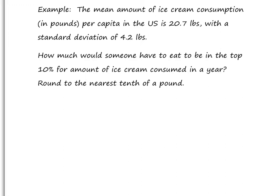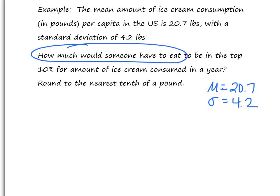So let's see what we've got here. We've got the same information we had before - the mean consumption is 20.7 pounds, the standard deviation is 4.2. So let's figure out what they gave us. They want to know how much would someone have to eat, so they're really asking us for an x value in order to be in the top 10%. As soon as I see that percentage, I draw my normal curve immediately and figure out where to put it.